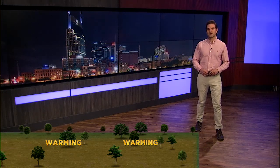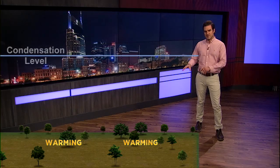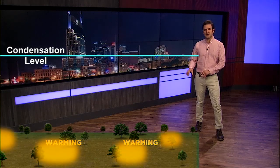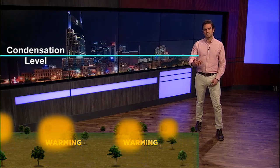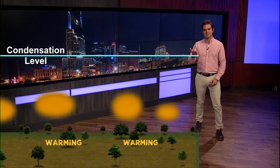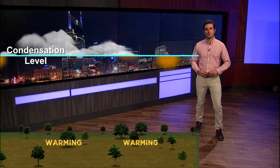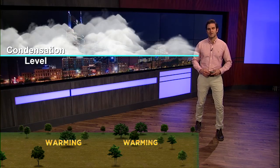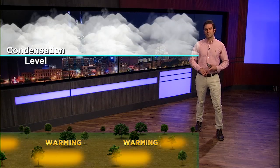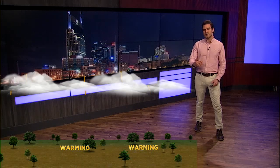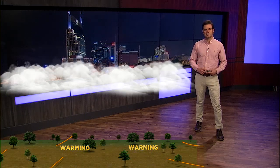Instability is the fuel for the storms. The sun is going to heat the earth during the day — that's the fuel. These warm parcels of air are going to rise and they'll cool as they go up. Eventually this moisture is squeezed out and that's when the clouds form. That's the beginning stage.